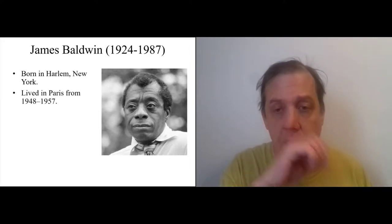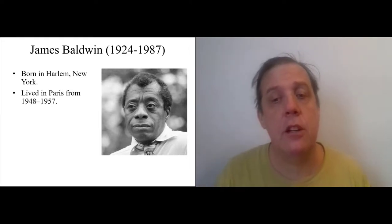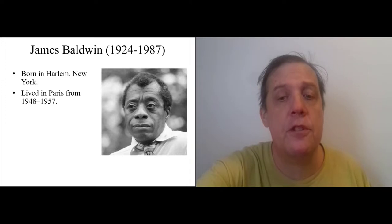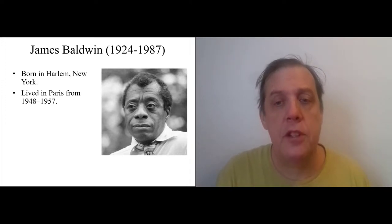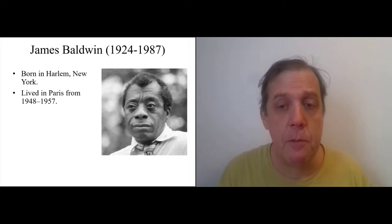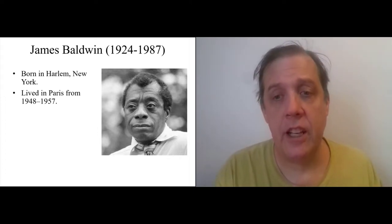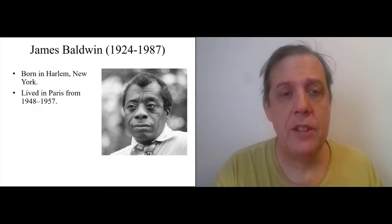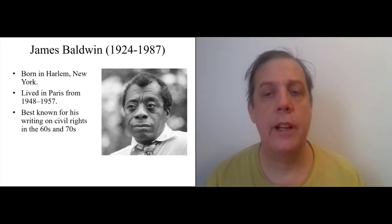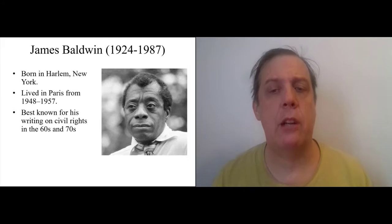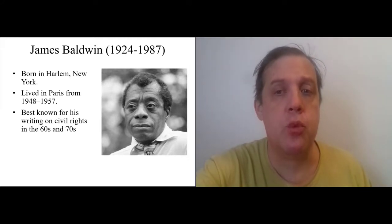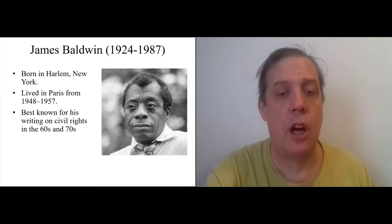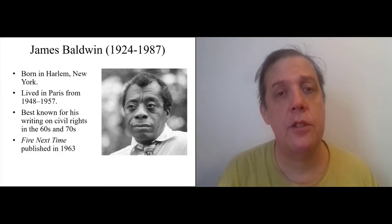He lived in Paris for about 10 years, during which time he wrote his first successful books, including Giovanni's Room, which deals with themes of homosexuality and queer spaces and alienation. Baldwin is best known though for his writing on the civil rights movement when he returned to America in the 60s and 70s, including his great book The Fire Next Time, which was published in 1963.